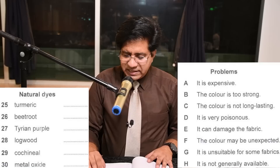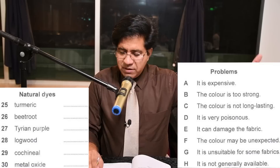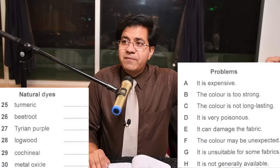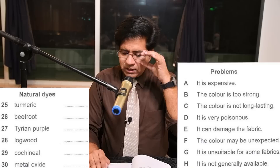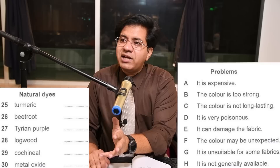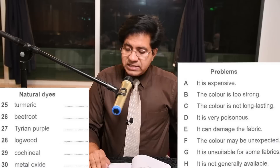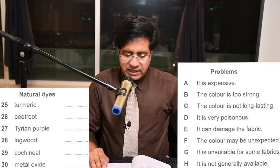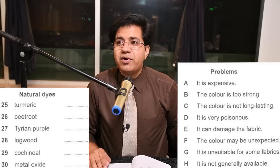Option F: color may be unexpected — they might say 'the color was disappointing,' 'it was not what we were expecting,' or 'not according to our expectation.' Option G: it is unsuitable for some fabrics — like unsuitable for cotton. Option H: not generally available — they might use 'rare,' 'not easily available,' 'not accessible,' or 'not found easily.'